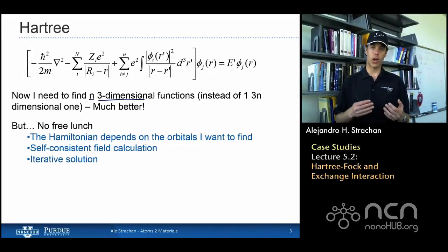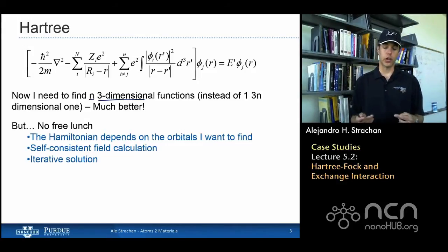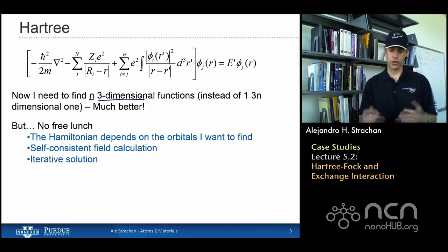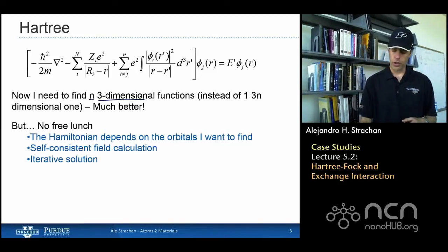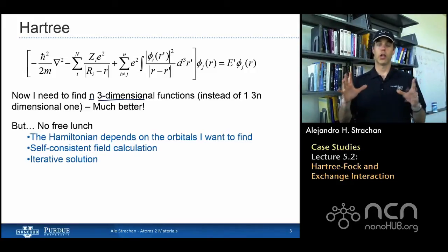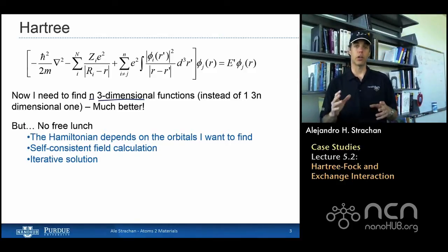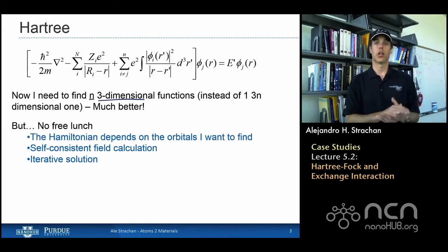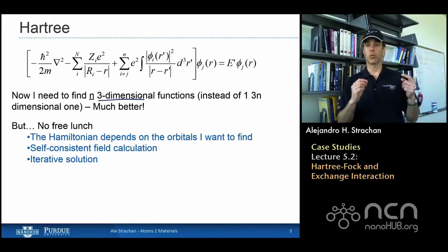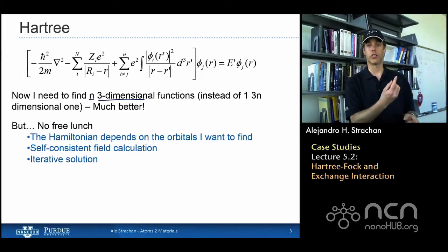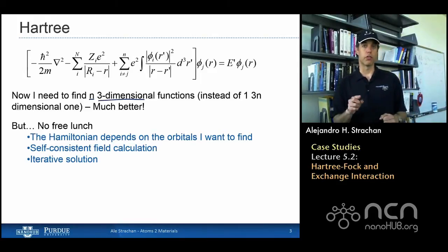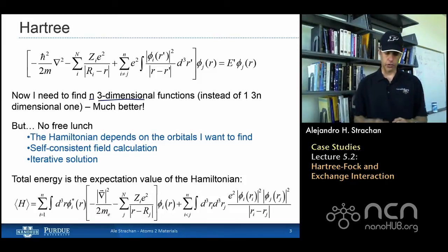However, there are a couple of challenges. First, this is a self-consistent field calculation. The effective Hamiltonian depends on the orbitals that I'm trying to find, as we discussed in the previous lecture. This is solved in an iterative way: we initially guess a set of orbitals, use those orbitals to build the effective Hamiltonian, find a new set of orbitals by solving the single-particle Schrödinger equation, and iterate until we find self-consistency.